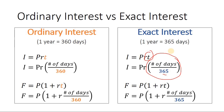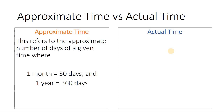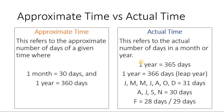That's the difference of ordinary interest and exact interest. For approximate time, this refers to the approximate number of days of a given time, where one month is equivalent to 30 days, meaning January through December is always equal to 30 days. Thus, one year is exactly 360 days. For actual time, this refers to the actual number of days in a month or year. If we have one year, this is equivalent to 365 days. Or if it's a leap year, this is 366 days because February becomes 29 days.